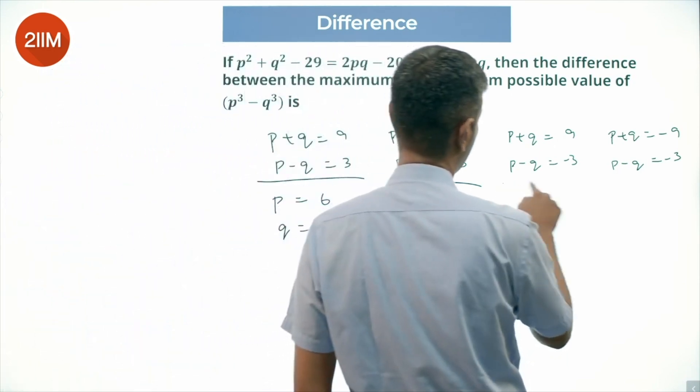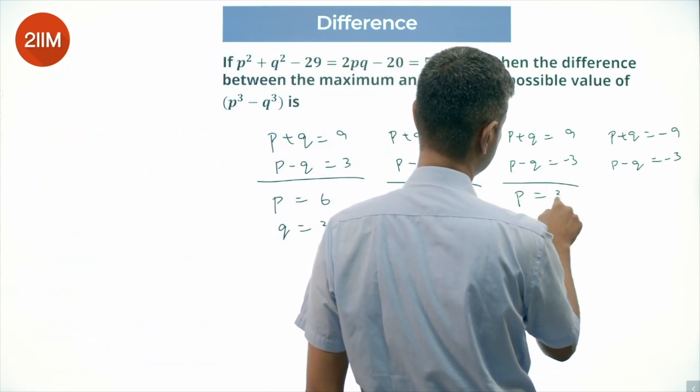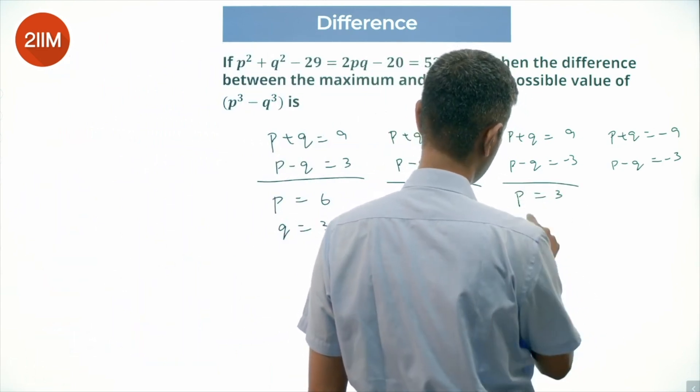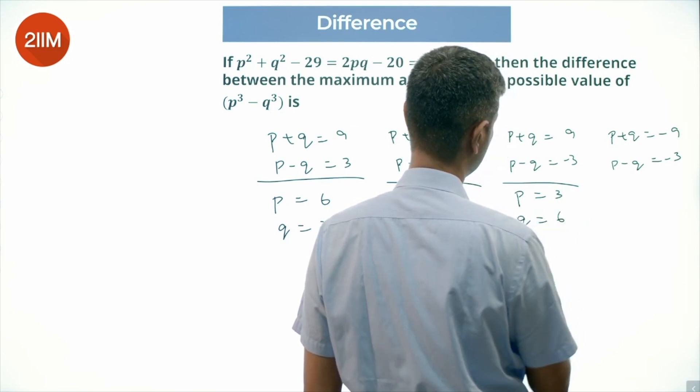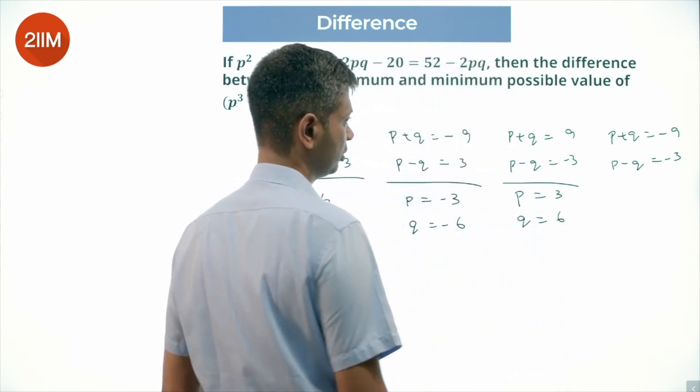Here 2P is 6, P is 3, P minus Q is minus 3, Q is 6, 3 plus 6 is 9.